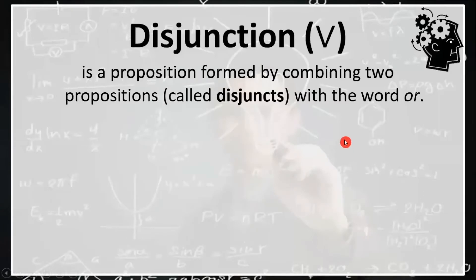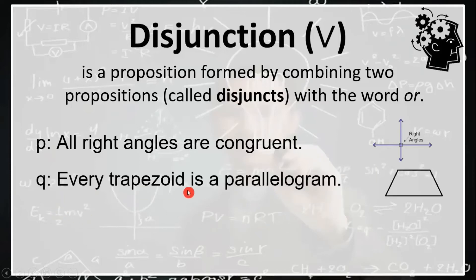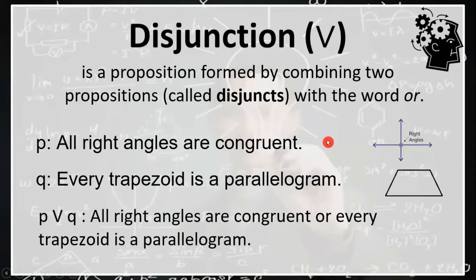The third logical operator is called the disjunction, denoted by the disjunction symbol. It is a proposition formed by combining two propositions called the disjuncts with the word 'OR.' For example, proposition P: all right angles are congruent, which is true. Proposition Q: every trapezoid is a parallelogram, which is false because a trapezoid has only one pair of parallel sides, while a parallelogram has two. If we combine these using 'OR,' we get: all right angles are congruent or every trapezoid is a parallelogram. A disjunction allows us to express alternatives.